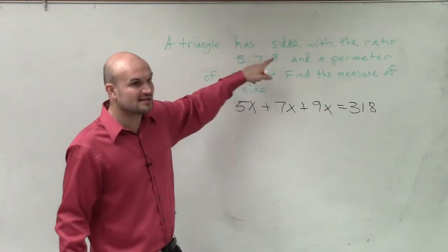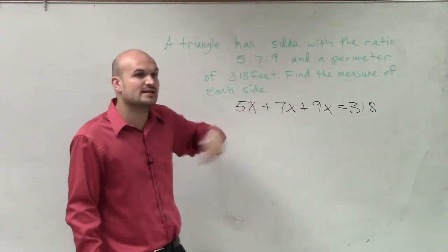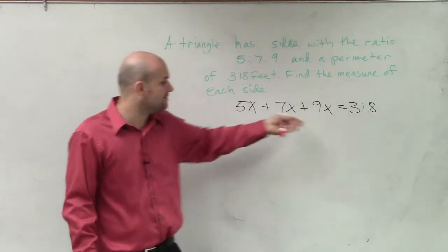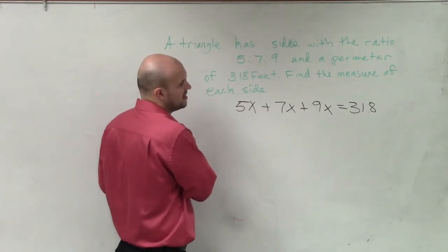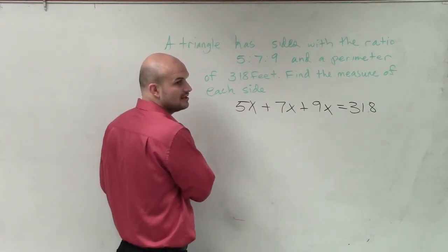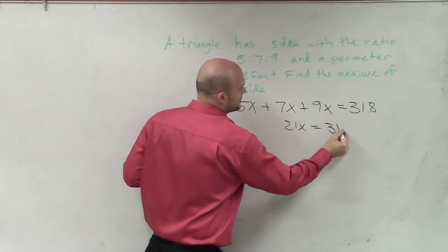So that's how you would set this problem up. This is not the perimeter. These are not the lengths of your sides. We're trying to find the lengths of our sides, but this is reduced. So we need to multiply it by a factor to get our correct numbers.